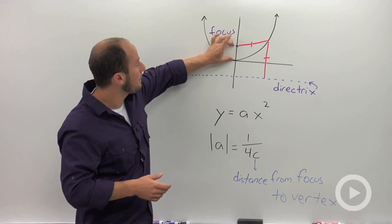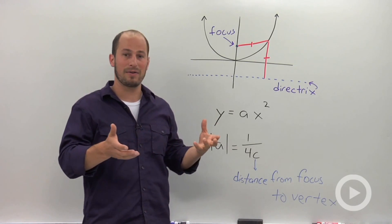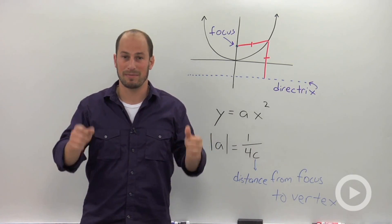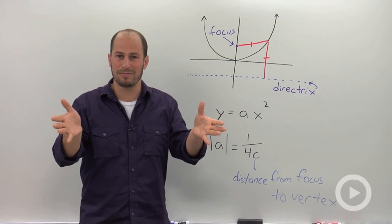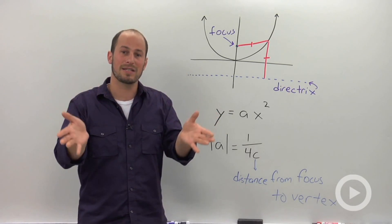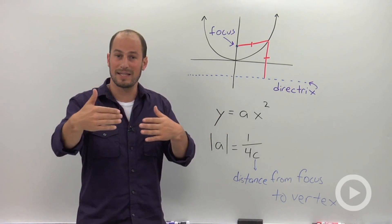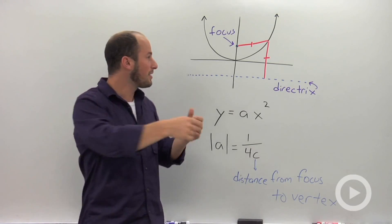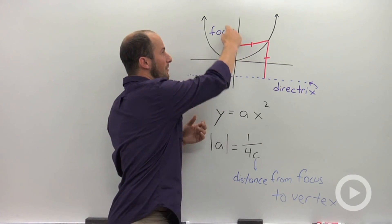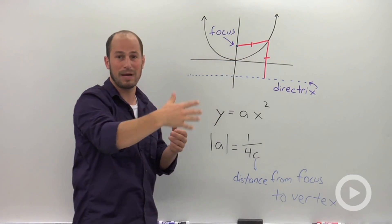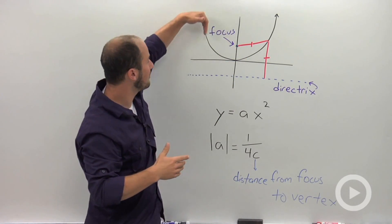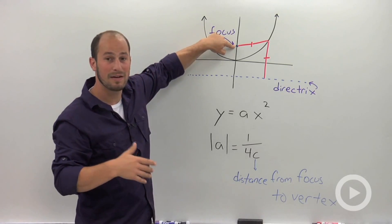If you think about going to a football game or something like that, you see the guys on the sideline with these big semi-circle basically looking things. Those are actually parabolas. And what they are is when the sound comes in, there's actually a little microphone at that focus. So all the sound waves come in and they all get reflected to that single spot. So no matter where anything comes down, it reflects into this focus.